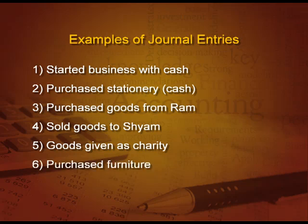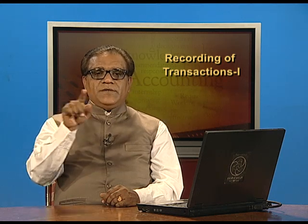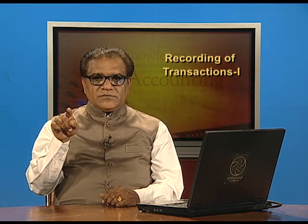Next: purchased furniture. We are purchasing, but we are purchasing an asset, not goods. So what is coming in? Asset — asset is debit. The entry is: furniture account debit, To cash account credit, because if nothing is mentioned regarding payment method, it is always cash. In the particulars column we write: furniture account debit, To cash. 'To' is prefixed with the credit one.